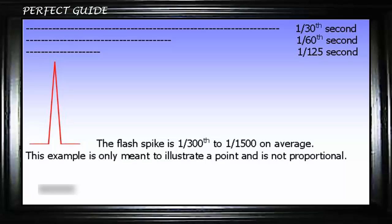F-stop and aperture control the strobe exposure — and again, we're ignoring TTL flash; this is all manual strobe. When your flash unit fires, that burst of light lasts somewhere around 1/300th to 1/500th of a second depending on the make and model. So if you use 1/60th of a second on your camera, that flash duration of 1/300th of a second is just a little spike at the very beginning of the time the shutter is open — and it would also be just a spike at 1/125th, 1/30th, 1/15th, and so on.